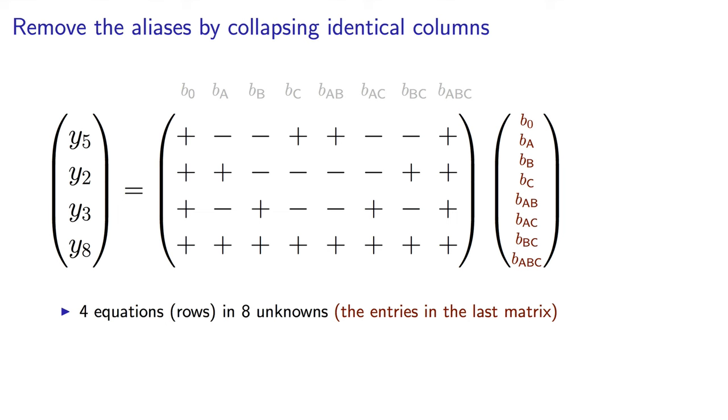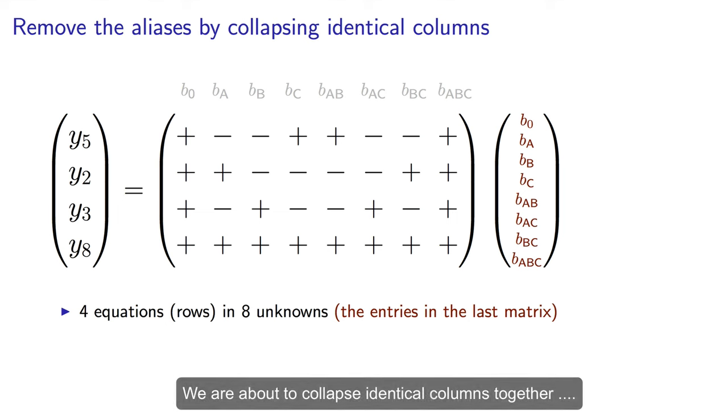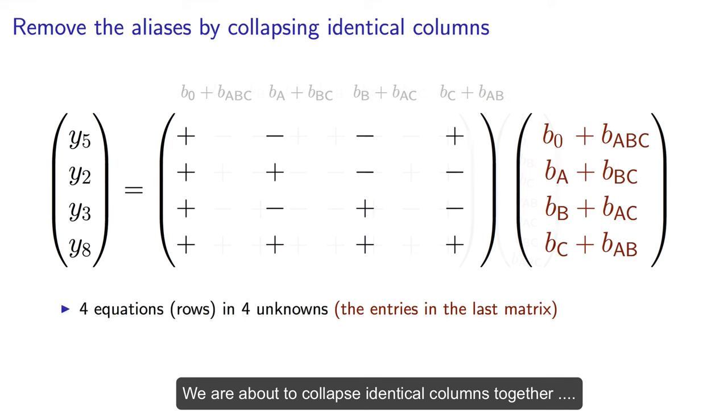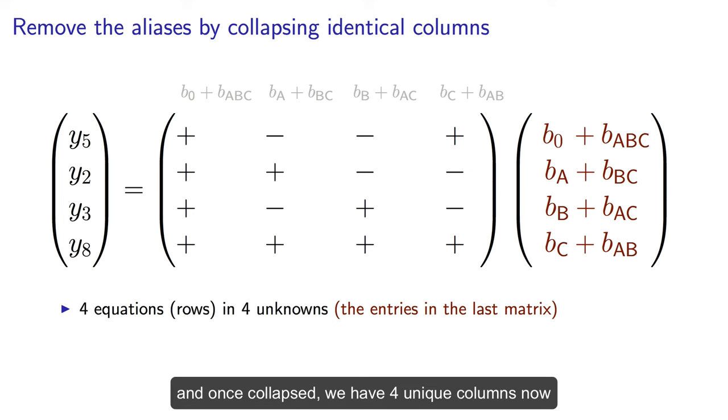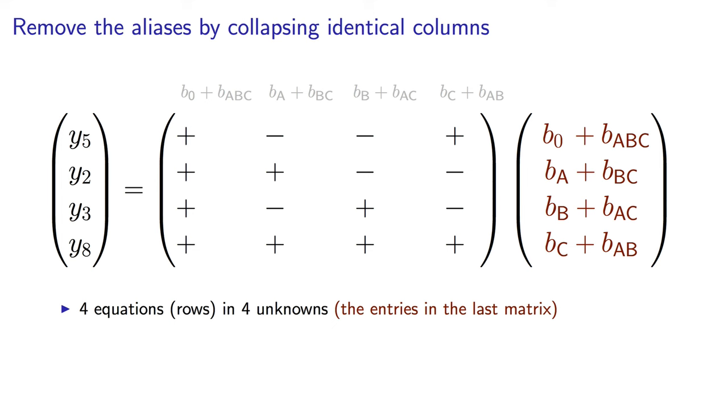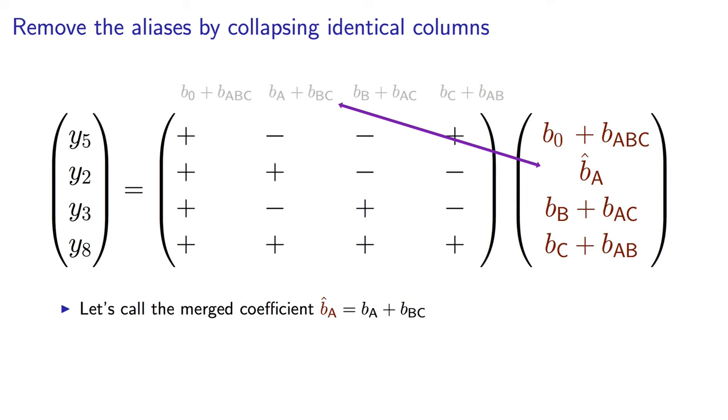Let's review the math. Those with a background in this sort of thing will recognize that one way to solve a set of underdetermined equations, where there are more unknowns than equations, is to collapse these columns together to achieve a square system that can be solved. Now you can see algebraically how this confounding develops. The coefficient for A in the model is a combination of the original A plus BC.